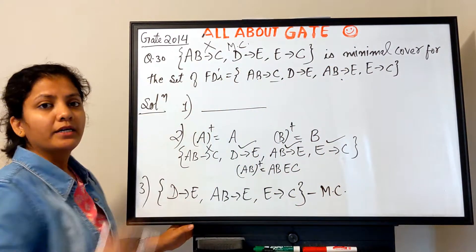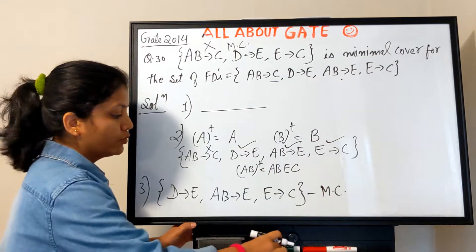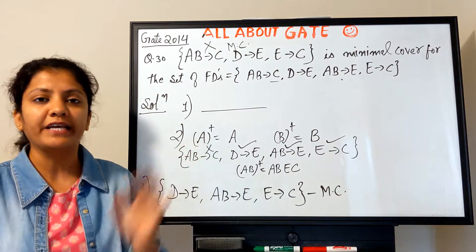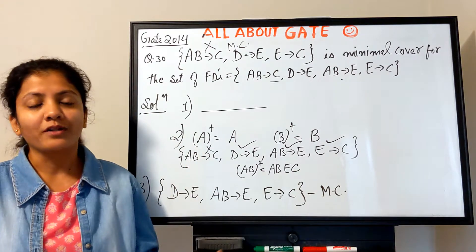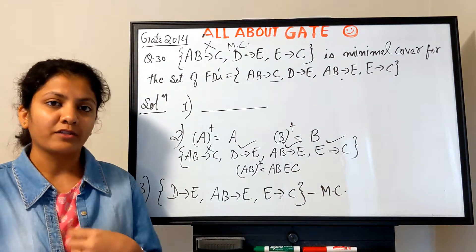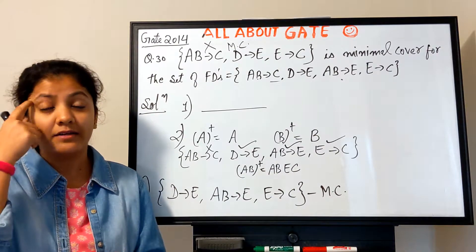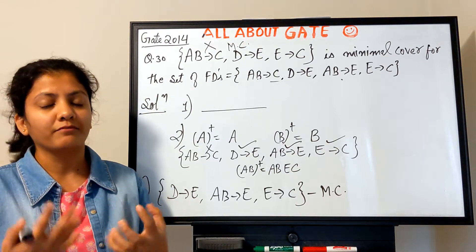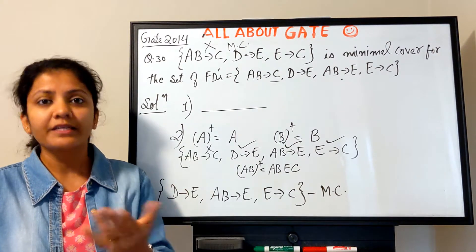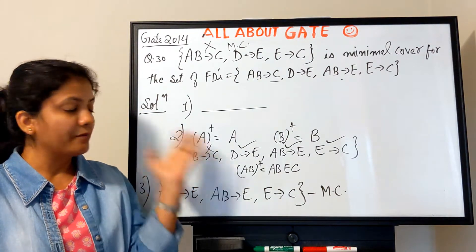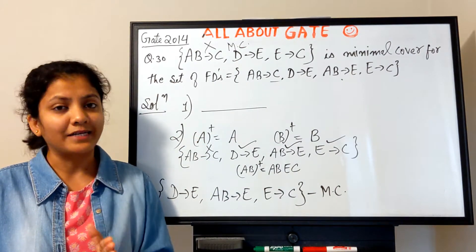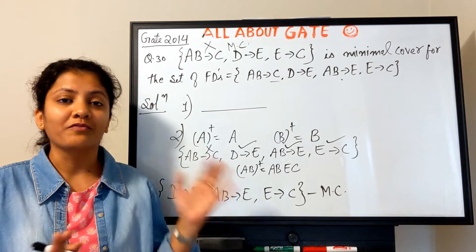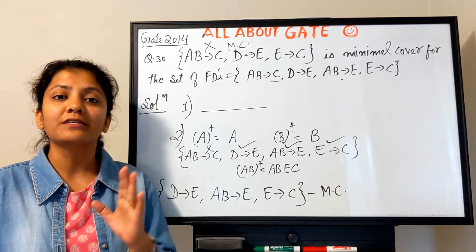So the correct minimal cover for the given FD set is D→E, AB→E, E→C — not the one proposed in the question. I hope minimal cover is now clear to everyone. I have many more practice questions; if you need them, ask in the comments and I'll provide them or make another video. We are done with all the background work, and in the next video we will start with normalization.